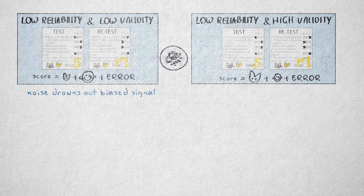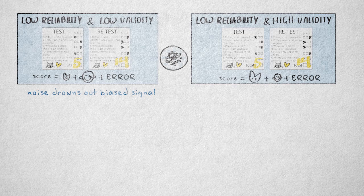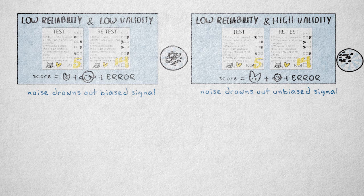An instrument can also have low reliability and high validity. A lot of random error, but very little systematic error. We're measuring the right property, just very imprecisely.